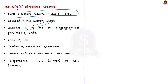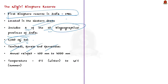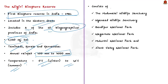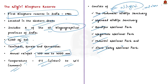The Nilgiri Biosphere Reserve is located in the Western Ghats and includes two of the ten bio-geographical provinces of India. Wide ranges of ecosystems and species diversity are found in this region. The total area is 5,520 square kilometers, encompassing parts of Tamil Nadu, Kerala, and Karnataka. Annual rainfall ranges from 500 mm to 7,000 mm with temperatures ranging from 0°C in winter to 41°C in summer. The reserve falls under the bio-geographical region of Malabar rainforest. The protected areas within it include Mudumalai Wildlife Sanctuary, Wayanad Wildlife Sanctuary, Bandipur National Park, Nagarhole National Park, Mukurthi National Park, and Silent Valley National Park.